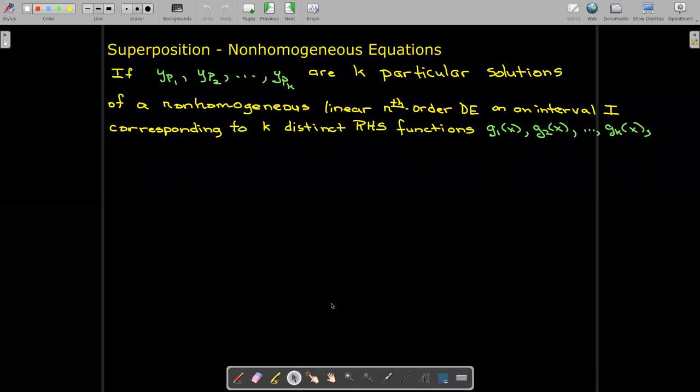Now there is also a superposition formula for non-homogeneous equations. It's more complicated because the right-hand side in a non-homogeneous differential equation is not zero. It's some function g.